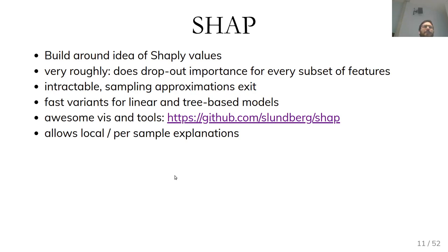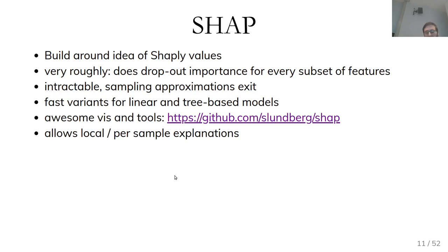SHAP is probably the interpretation method I've seen most used in industry. Standard permutation importance is slightly easier conceptually, but SHAP definitely has some nice properties that you don't get from permutation importance. I linked two books in the schedule that talk about interpretable machine learning — both from a group in Munich. One is about how to do interpretable machine learning, the other is about why it doesn't work. They're both very good and go into much more detail. I highly recommend looking at them.